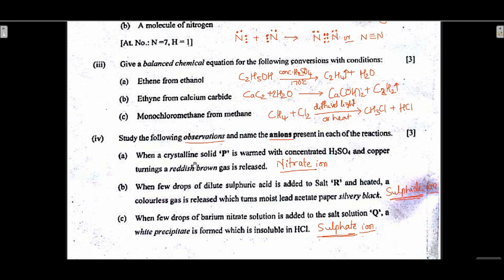Study the observations and name the anions. A: a crystalline solid with concentrated sulfuric acid produces nitric acid, which with copper turnings gives NO2 gas — so the anion is nitrate ion. B: lead acetate paper turns silvery black indicating H2S gas, so the anion is sulfide ion. C: few drops of barium chloride added to the salt solution gives a white precipitate insoluble in HCl — that is sulfate ion.